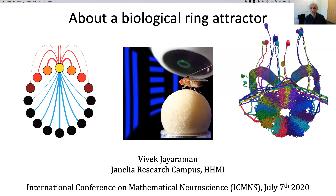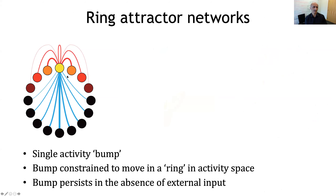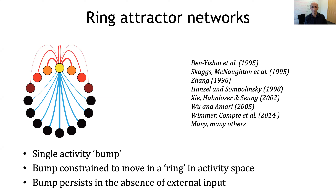The talk is really going to be about a biological ring attractor, or at least a biological network that we think is well approximated as a ring attractor. Many of you are familiar with ring attractors from the mathematical, theoretical side — a dynamical system which has this lovely property that if you have a network of nodes, you can stabilize activity at any one of those nodes, and then also flexibly move it in either direction. So a seemingly simple property where any node can be active at any given time and be stable, but it's multi-stable and can go around. This simple construct is actually quite useful and has many intriguing properties.